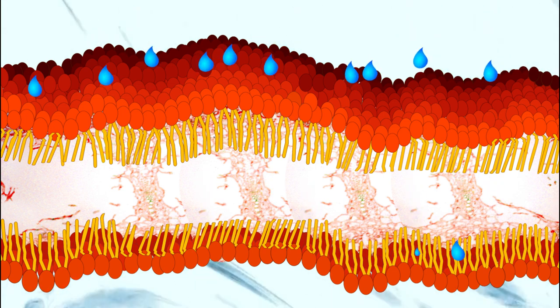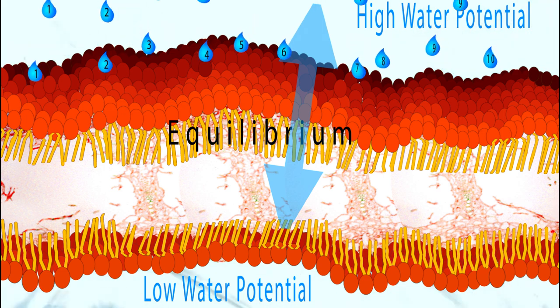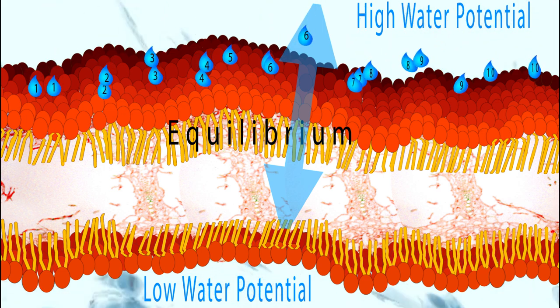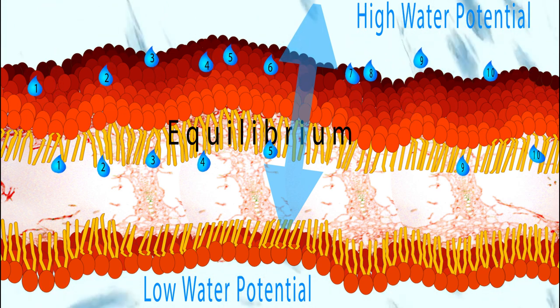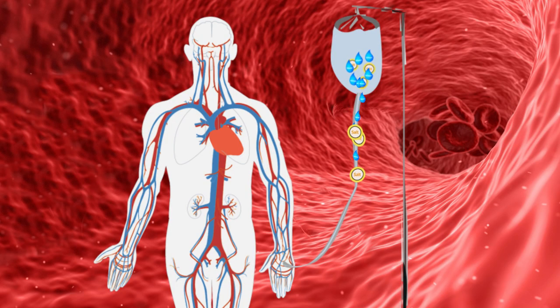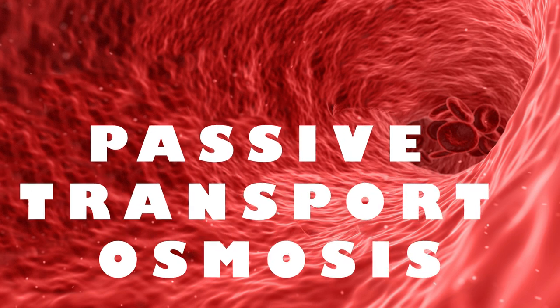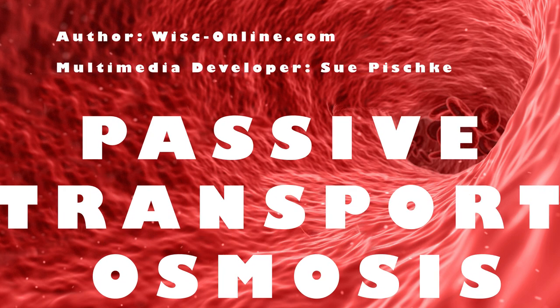Today we've reviewed passive transport osmosis. You've learned that osmosis allows water to move through a semi-permeable membrane to reach equilibrium. You've also explored how passive transport works without using any energy. Congratulations, you have completed passive transport osmosis.